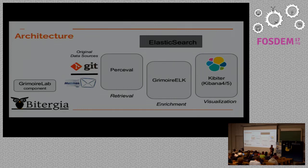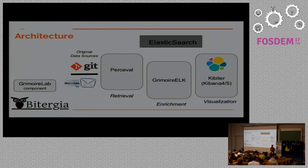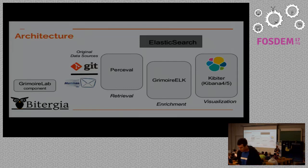For producing added-value indexes we use Grimoire ELK. Grimoire ELK goes to the raw indexes and enriches the information — for instance, calculating how long it took to close a ticket, or finding out whether a pull request is still open and calculating numbers based on that. With that information we produce new indexes in Elasticsearch that we call enriched indexes, and those indexes are designed for visualization with Kibana. They can also be queried with Python scripts. Our version of Kibana is Kibiter — it's a soft fork, so it's very similar, and you can also use standard Kibana if you want. Kibana produces the frontend dashboards.